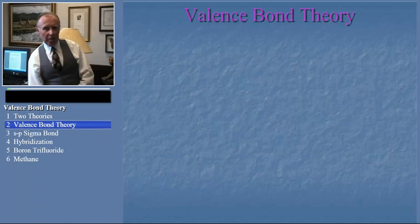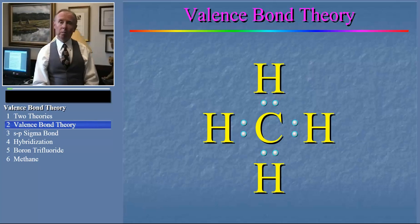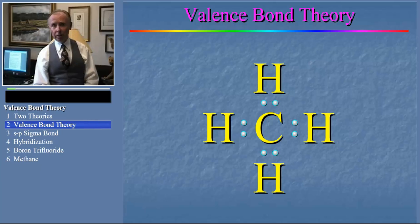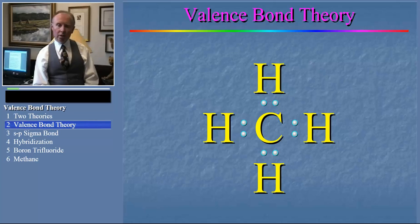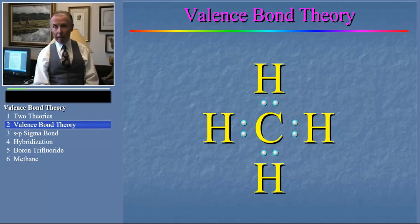Now, valence bond theory. From Lewis dot structures and VSEPR, you might get the impression that the electrons in a bond sit between the atoms like colons in a sentence. For example, here's the Lewis dot structure of methane. But we'll see from our discussion that, in fact, the electrons in the bond are in the form of a cloud, just like the electrons in a single atom. Valence bond theory will help us predict what this cloud looks like.